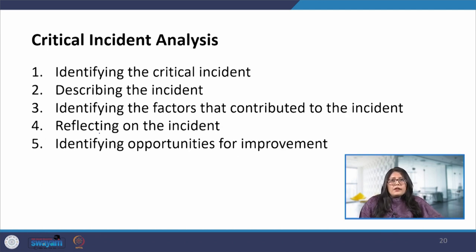CIA typically involves these steps. First is identifying the critical incident, where we select an event or experience that is significant in some nature and has the potential to provide insights into the underlying issue or problem that may be there. Second is describing the incident. This involves providing a detailed account of what really happened during the incident, including the actions of the individuals who were involved, the context in which the incident occurred, and also what was the outcome of it.